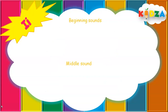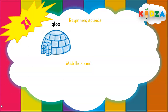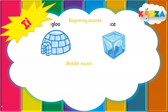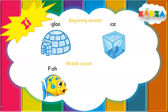Beginning sounds of I. Short sound I — I-G-L-O-O, Igloo. Long sound I — I as in Ice: I-C-E, Ice. Middle sound: I as in Fish — F-I-S-H, Fish. Short I. Long sound I — I as in Kite: K-I-T-E, Kite.